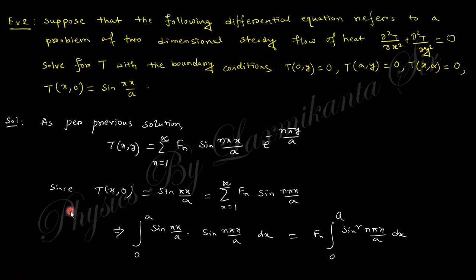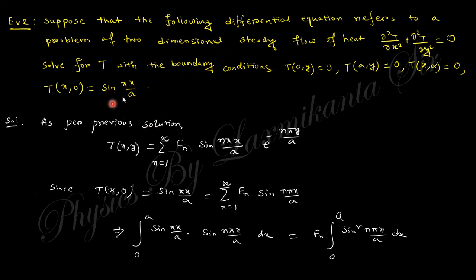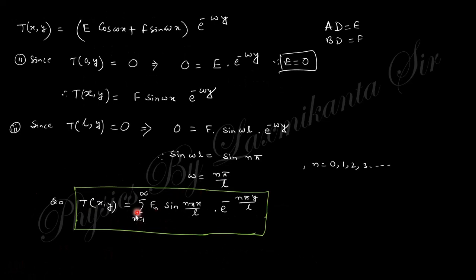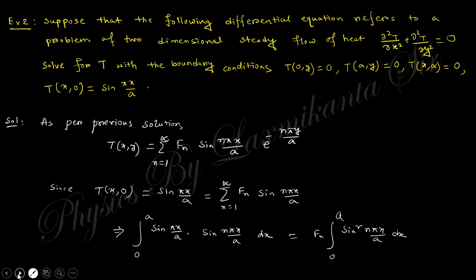Take another example. Suppose the following differential equation refers to a two-dimensional steady state flow problem. The boundary conditions are given: three conditions are identical to the previous problem, but one is different — instead of a general f(x), a specific expansion sin(πx/a) is given. From the previous problem's solution, we can directly use the general solution form since those three identical conditions lead to the same solution process.